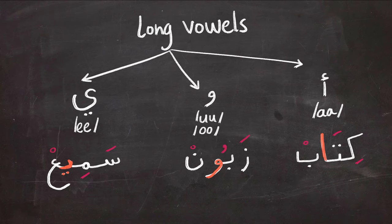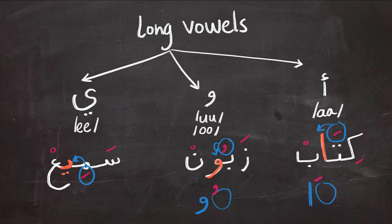One important thing to notice about these examples is that each long vowel will be preceded by a short vowel of the same nature — meaning the alif will be preceded by fatha, the waw will be preceded by dhamma, and the ya will be preceded by kasra.